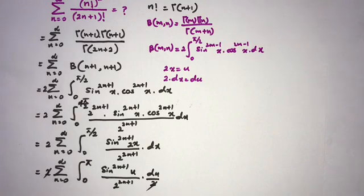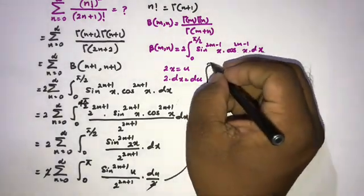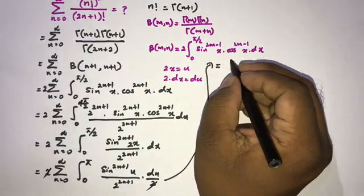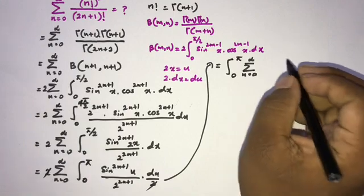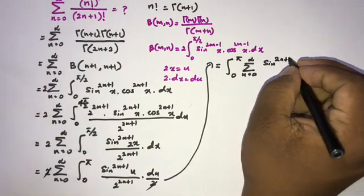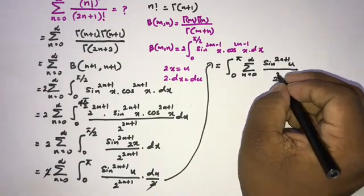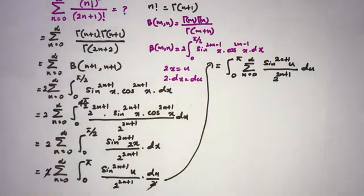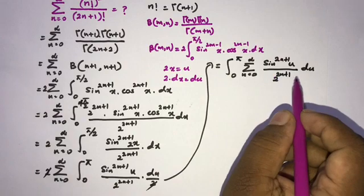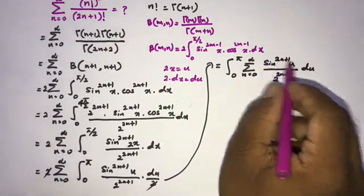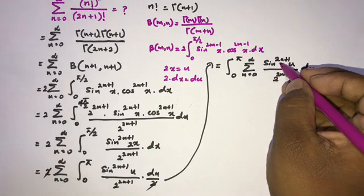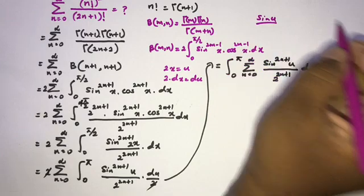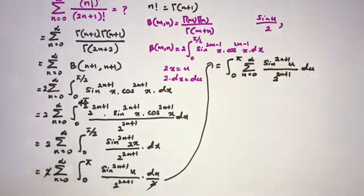We can now swap the integral sign and the sigma notation. This gives the integral from 0 to pi of the infinite sum from n equals 0 to infinity of sine raised to the 2n plus 1 of u over 2 raised to the 2n plus 1, du. Looking at the first term, when n equals 0, we have sine of u over 2.